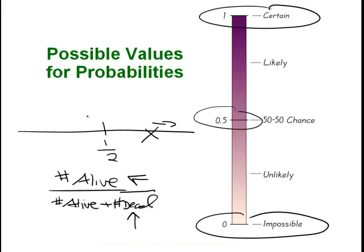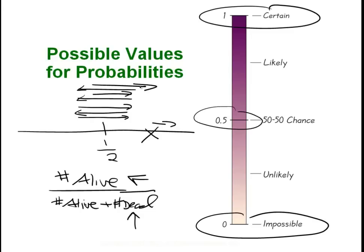We've seen this pattern before: a growth spurt, then the Black Plague kills off a large portion of the population and dumps them in the dead category. Then a growth spurt and World War 1, then a growth spurt and World War 2. Right now we're on a growth spurt, so something has to happen to bring that probability back toward one half instead of one. It's a beautiful theory with just one bad flaw — I'll tell you later in the video; think about what you believe the error in his argument is.